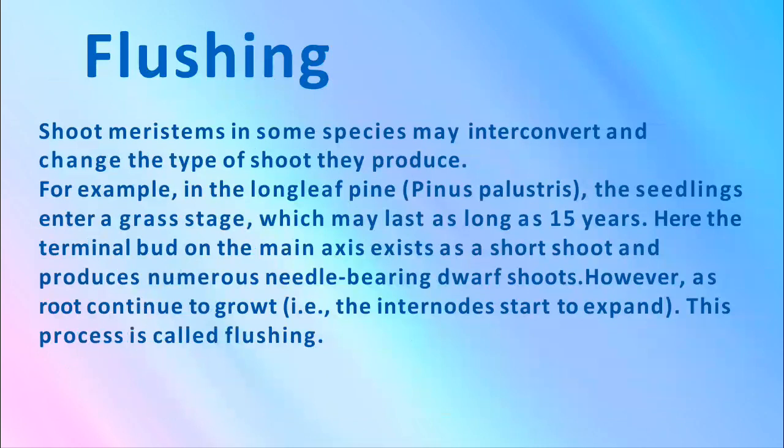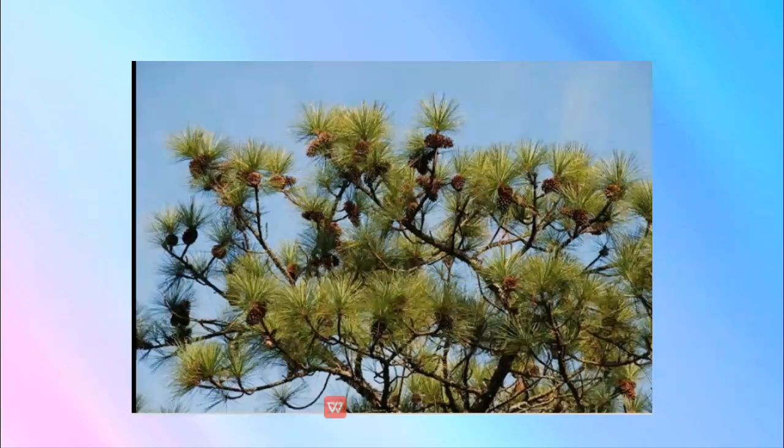For example, in longleaf pines (Pinus), the seedling enters a grass stage which may last as long as 15 years. Here the terminal bud on the main axis exists as a short shoot and produces numerous needle-bearing dwarf shoots. However, as roots continue to grow, this process is called flushing. You can observe here in the diagram the Pinus tree with cones.